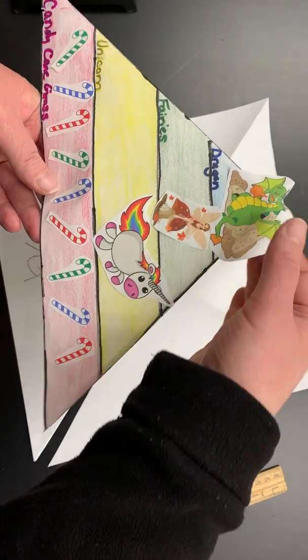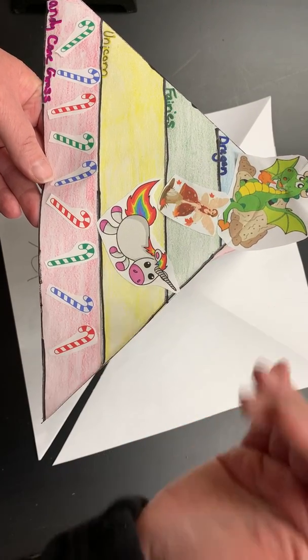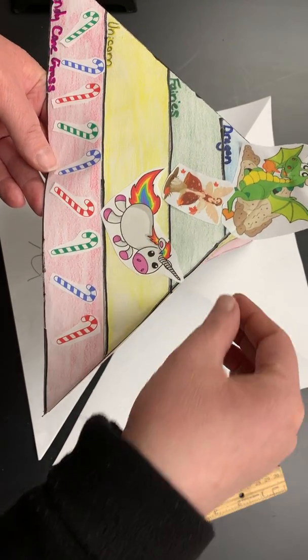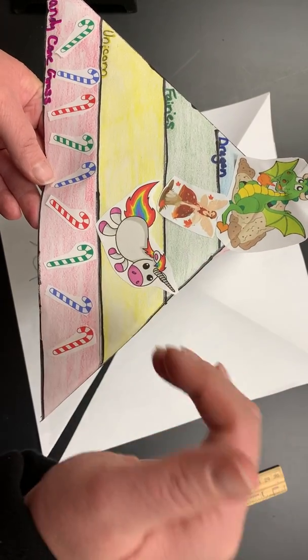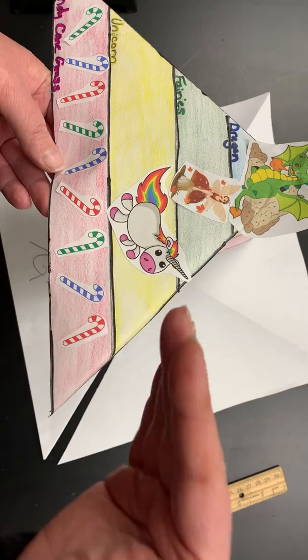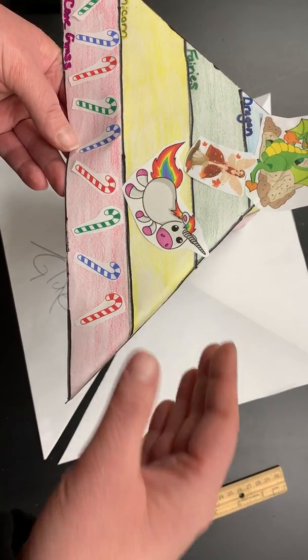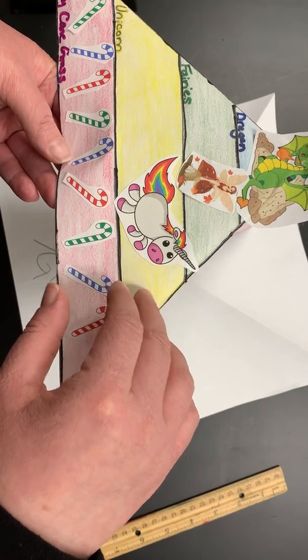Then we actually had a discussion about what organism would come next. Would unicorn come next or would fairies come next? And this person actually wanted to put fairies as the first one, but we discussed their relationship to other organisms. And if you think about it, a unicorn is very similar to a horse and horses are herbivores. So herbivores can only be in that first step, right?